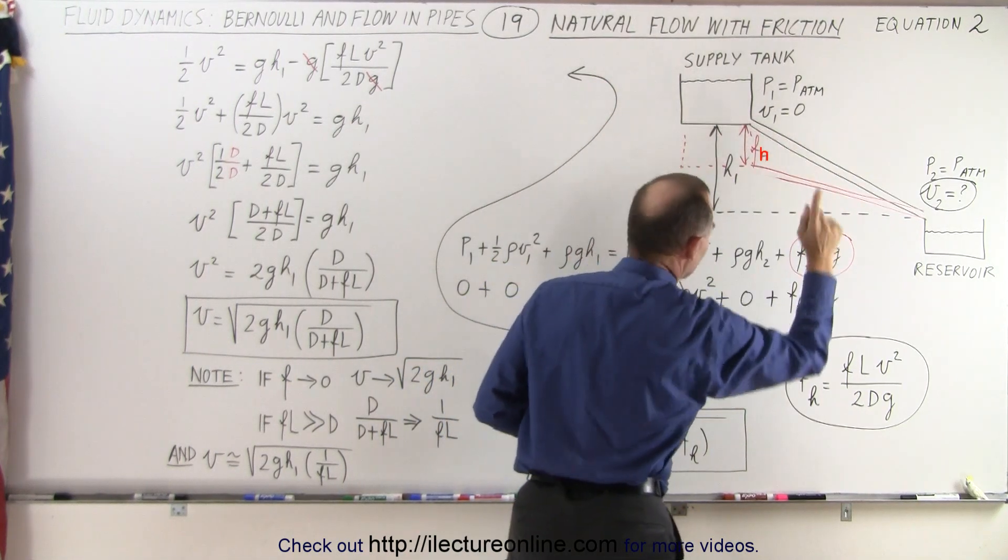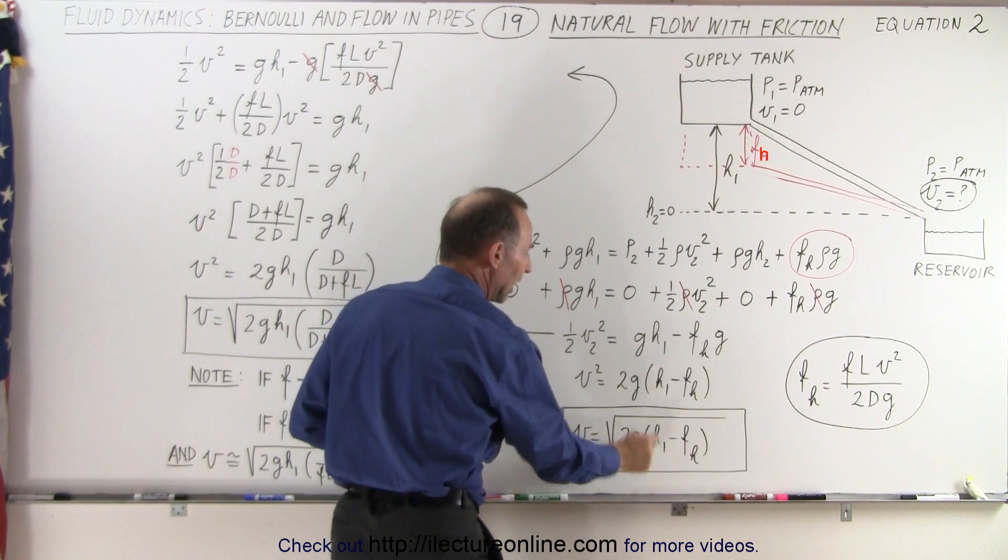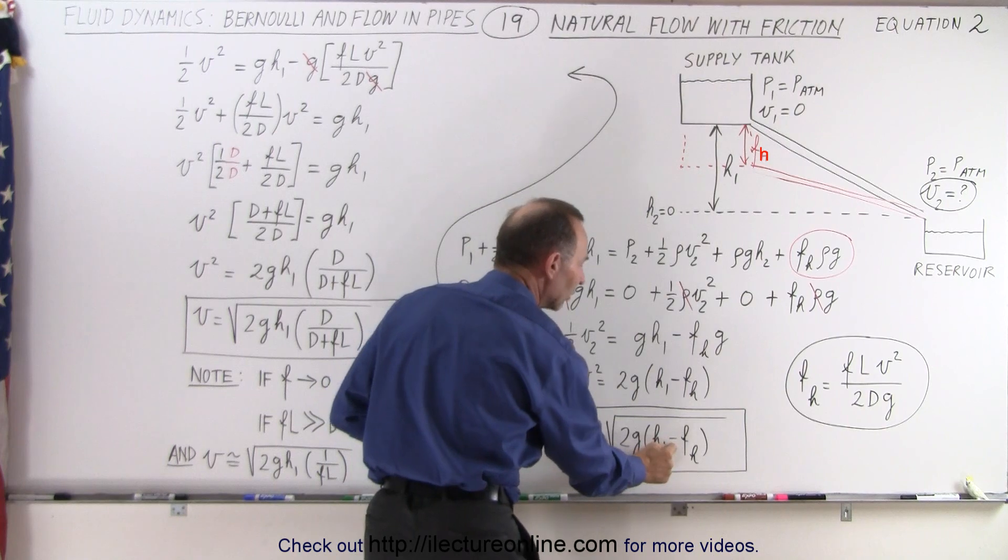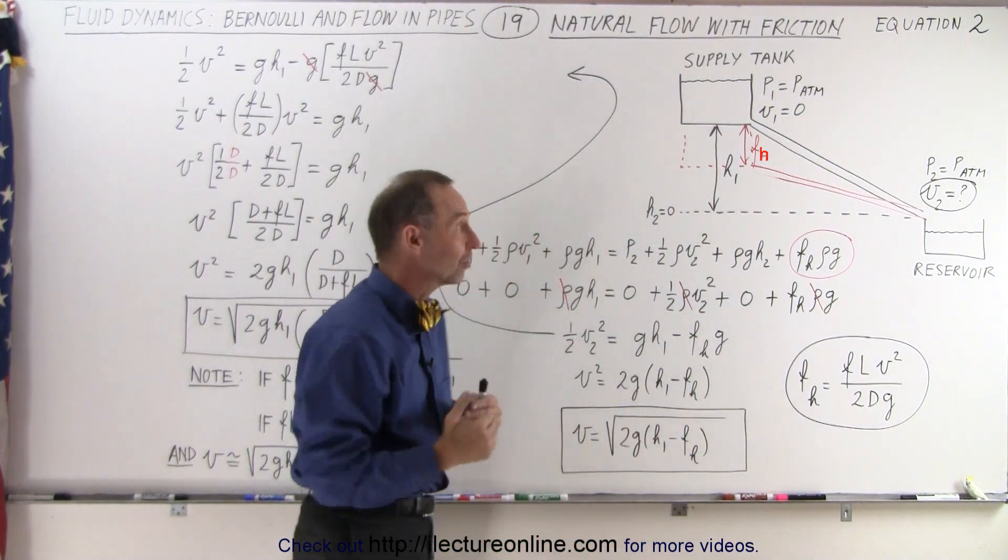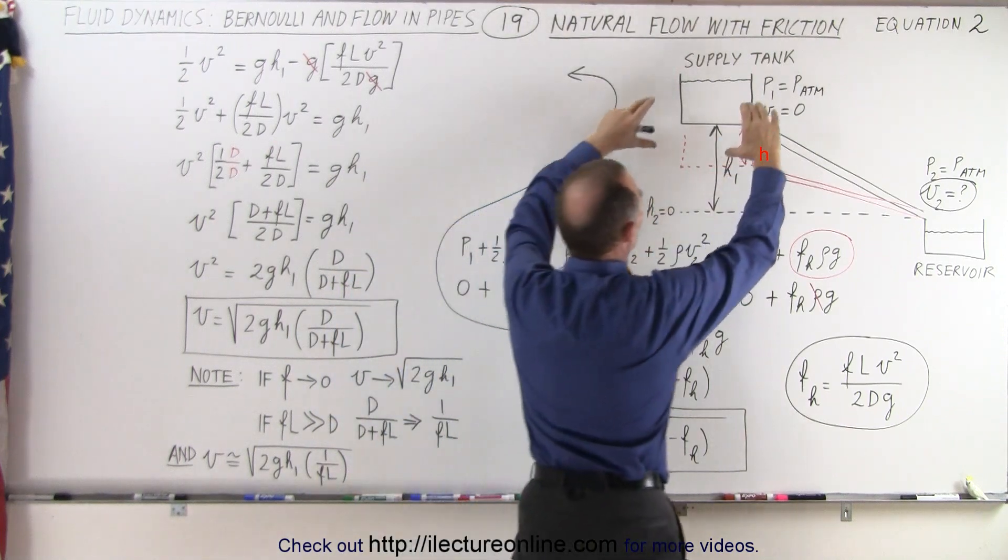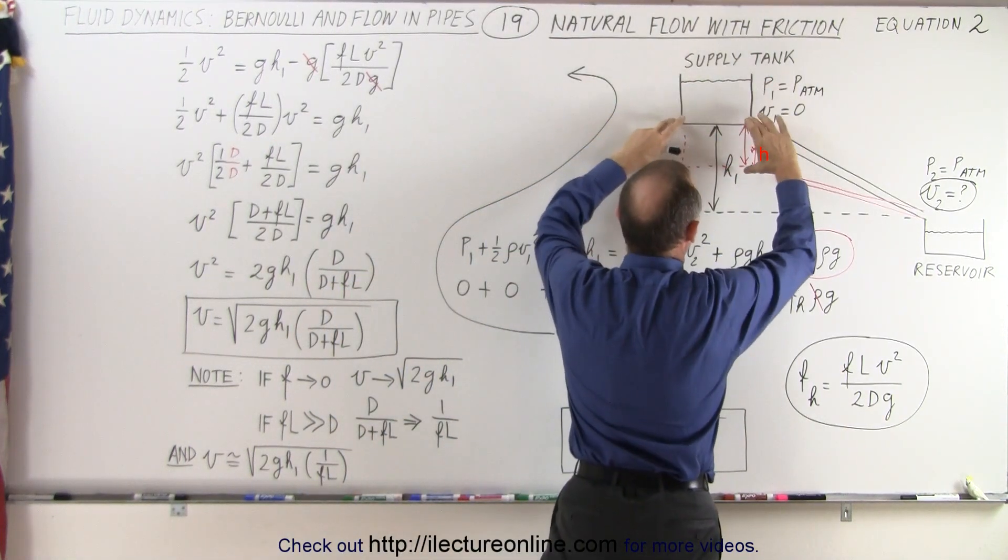We realized that the velocity would not be equal to the square root of 2gh, but that it would be equal to the square root of 2g times the quantity h minus the frictional head loss. Basically, the frictional head loss makes it so that it seems as if the supply tank was actually lower by that amount.